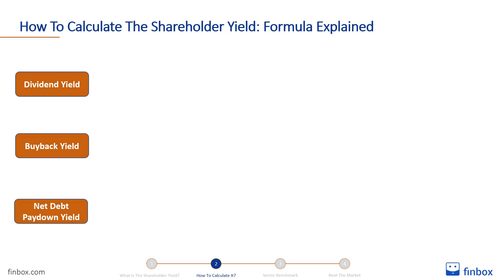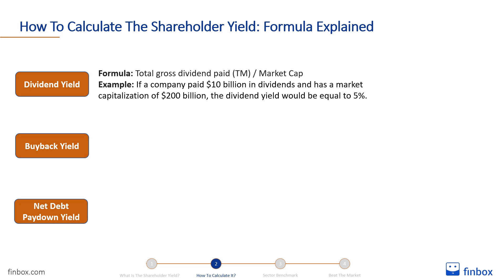The dividend yield is calculated by dividing the total gross dividend paid over the last 12 months by the company's market capitalisation. If a company paid $10 billion in dividends and has a market capitalisation of $200 billion, the dividend yield would be equal to 5%.